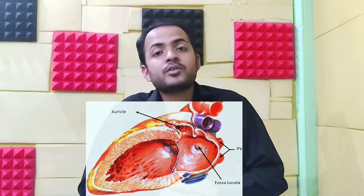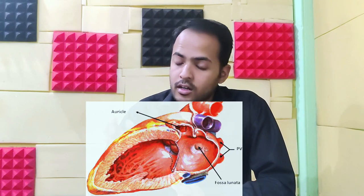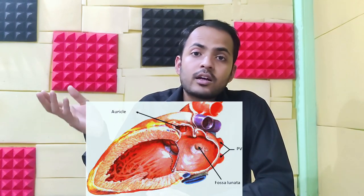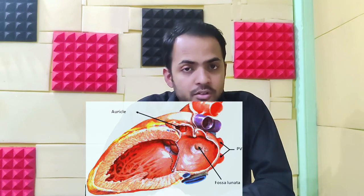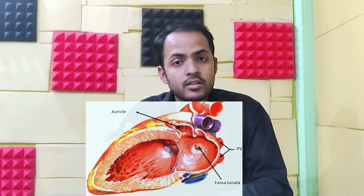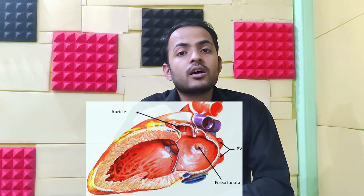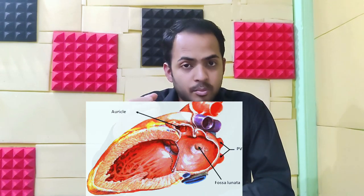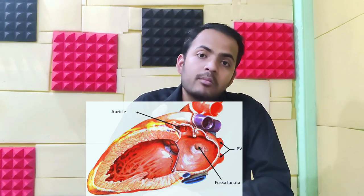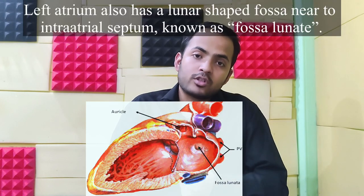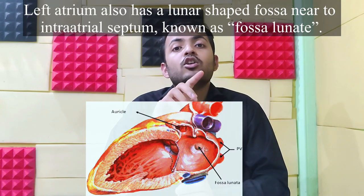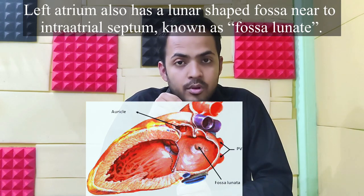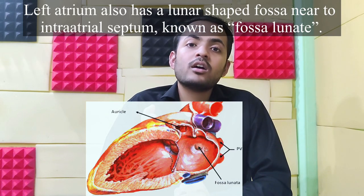In my last video, I told you that to the left side of the opening of the inferior vena cava you will find the fossa ovalis, which presents near the inter-atrial septum. Same way, the left atrium also has a fossa near the inter-atrial septum, and it is lunate or lunar shaped, so we call it fossa lunata.